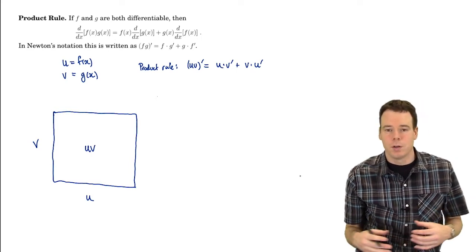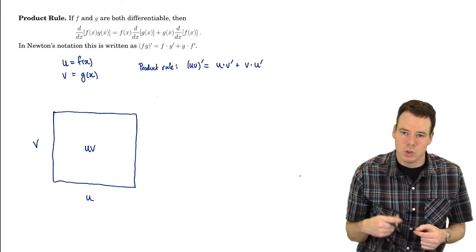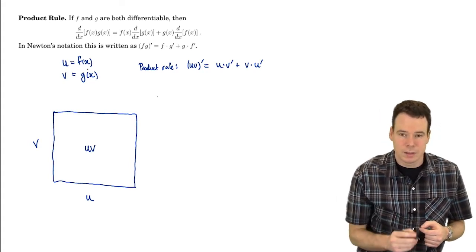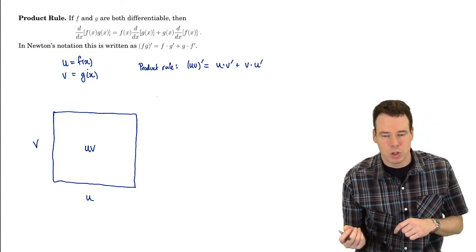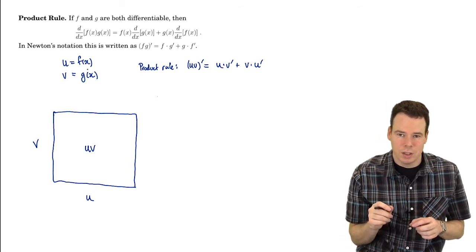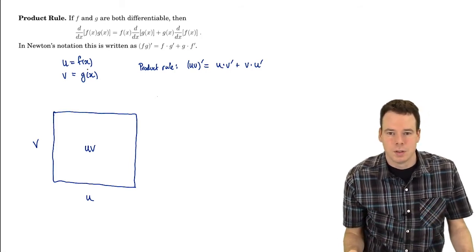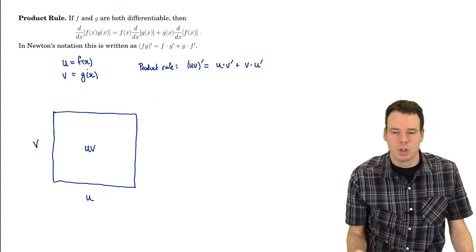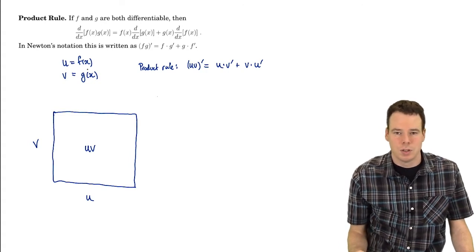Now what derivatives are, they're all about change. If you change the input, if I change the x a little bit, how does the output change? For a small change in x the derivative is a measure of the ratio of the change in y over the change in x or the change in output over the change in input.